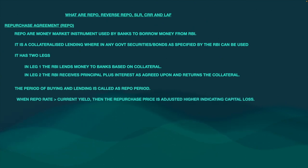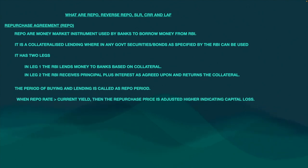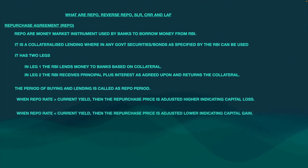When the repo rate is greater than the current yield, the repurchase price will be adjusted higher, indicating that there is a capital loss. When the repurchase rate is higher than the current yield, you have to adjust higher so that there is going to be a capital loss for the RBI. Similarly, when the repo rate is less than the current yield, the repurchase price is adjusted lower, indicating a capital gain for the RBI.